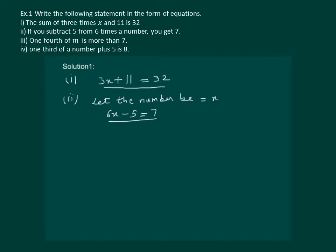Let us read the third part. It says: 1/4th of m is 3 more than 7. So, 1/4th of m means m by 4.